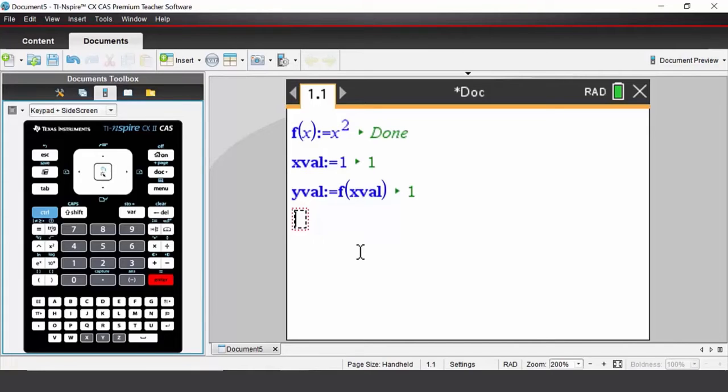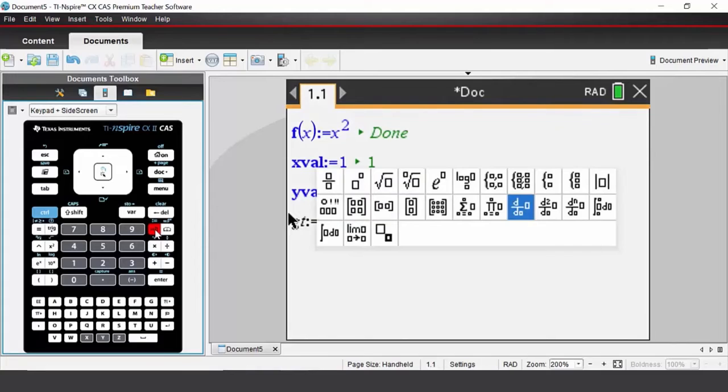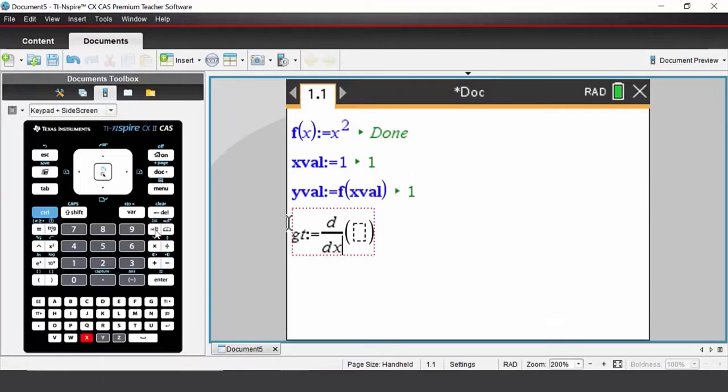I now need to define the gradient of the tangent, so I'm going to call it gt to stand for gradient of my tangent. That's going to be defined to be equal to—instead of typing in colon equals, we could press control and then just above the math template is your defined to be equal to key. This is going to be the derivative, so press the math template and choose the derivative template.